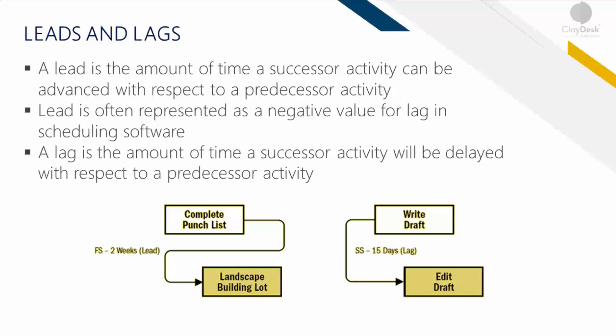The concept of leads and lags: a lead is the amount of time a successor activity can be advanced with respect to the predecessor activity. For example, if you are constructing a new office building, the landscaping could be scheduled to start two weeks prior to the scheduled punch list completion. This would be shown as a Finish-to-Start with a two-week lead time.